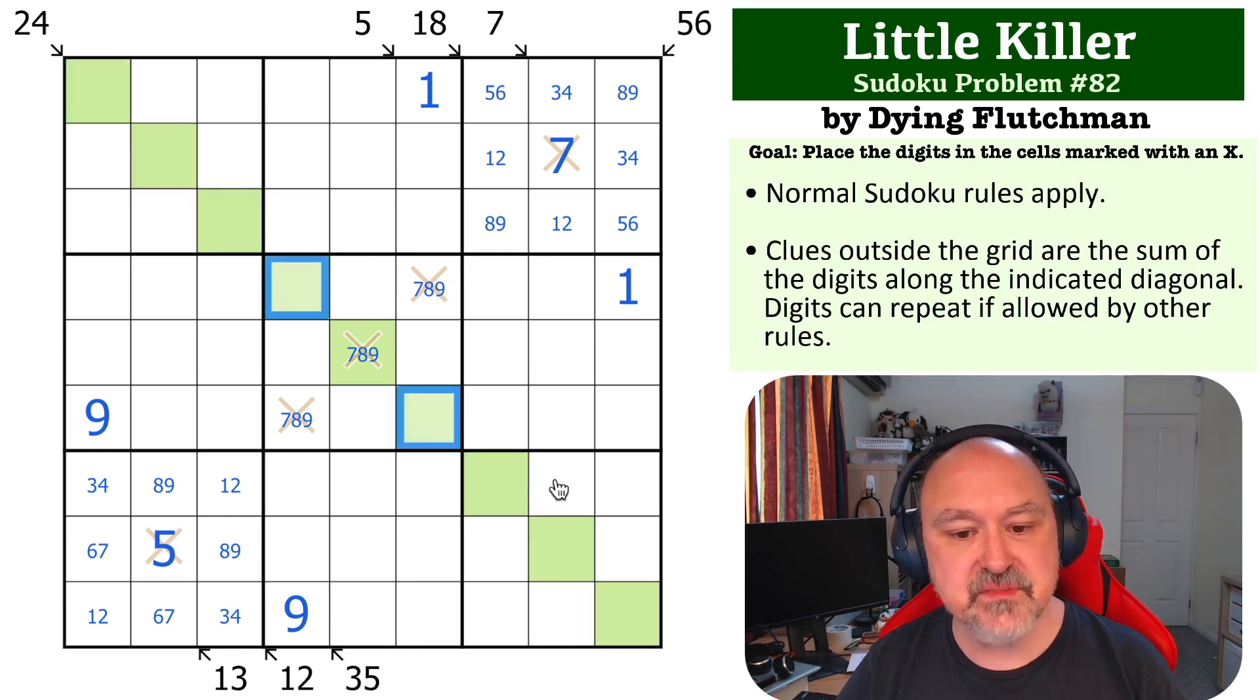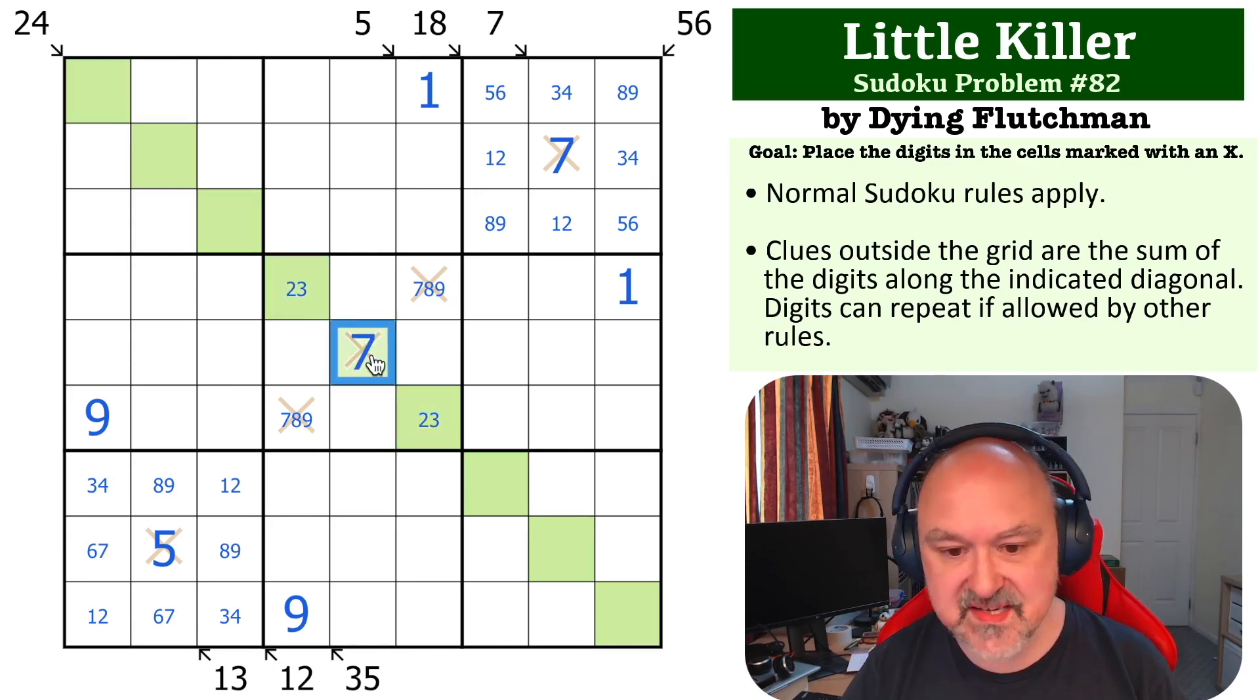However, the minimum you can put in any box is 6 if you do 1, 2, 3. So this absolutely must be minimum. So this must be 2, 3 with 7. That takes 7 out of those, and then this 9 makes this the 8 and this the 9, and that's the solution to the problem.